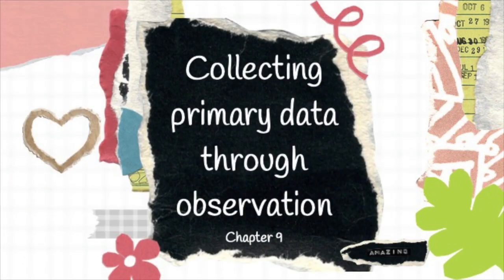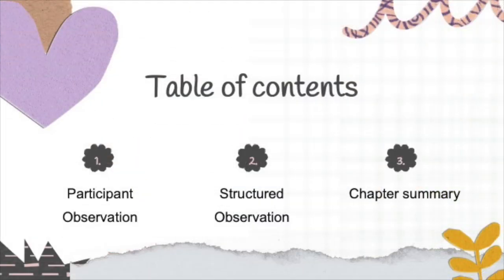Let's move to the next topic on collecting primary data through observation. Observation can serve as a data collection method for both qualitative and quantitative research. For example, observing how many cups of coffee are sold from 8am to 10am daily is a quantitative observation, and observing how the server greets customers is a qualitative observation. For this topic, we will look into the difference between participant observation, structured observation, and finally the chapter summary.